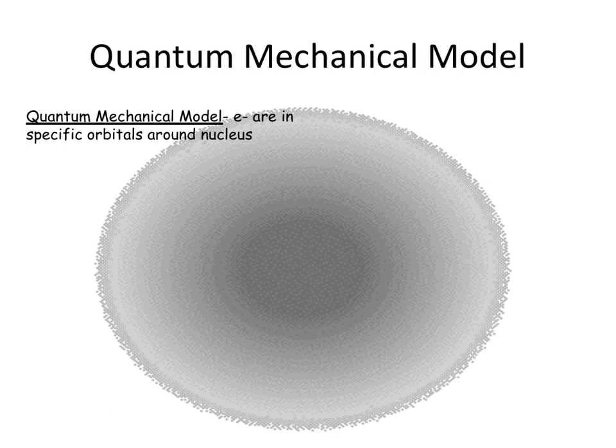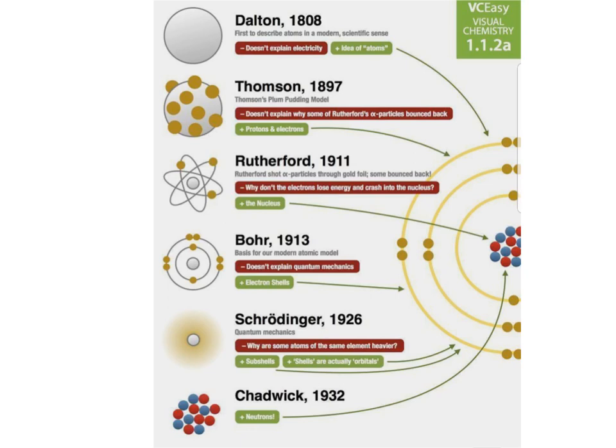That brings us to what we now call the quantum mechanical model. The quantum mechanical model says electrons are in orbitals rotating around the nucleus — not a simple circular path like Bohr thought. It is very complex and difficult to visualize. Here is a nice summary. A couple of scientists we didn't discuss in detail include Schrödinger, who was responsible for figuring out about the orbitals, and Chadwick, who figured out there were neutrons through mass spectroscopy.